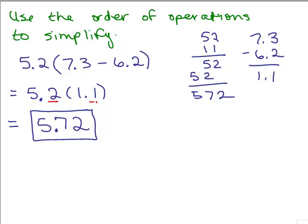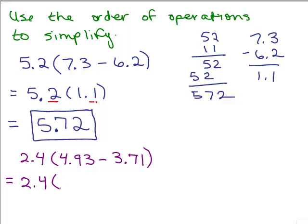Here's one for you to try. Put the video on pause and try this on your own. Again, our first step will be to simplify within the parentheses, and there's a subtraction. There could be an addition or a subtraction in there — there just happened to be a subtraction again. So go over to the side, make sure you line up decimals, and this is 1.22.